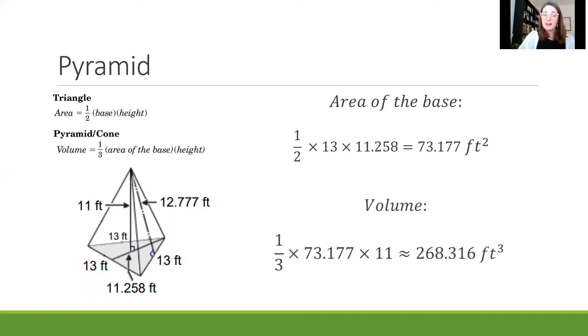Now we can use that area of the base to plug it in and we do one third times 73.177 for that area of the base and then we need to multiply that times the height. Well to find the height we're now talking about the full pyramid. So I need to look what line goes from the very bottom base on that triangle all the way to the top point of the pyramid and you can see that dark line that has an arrow pointing to it that says 11 feet.